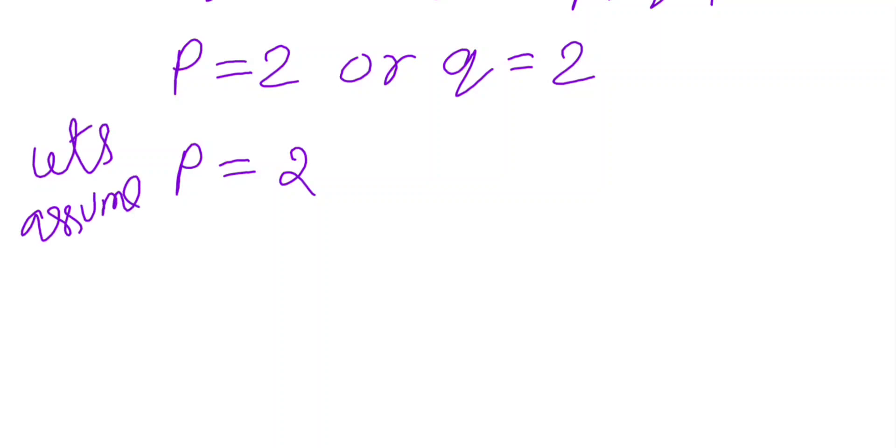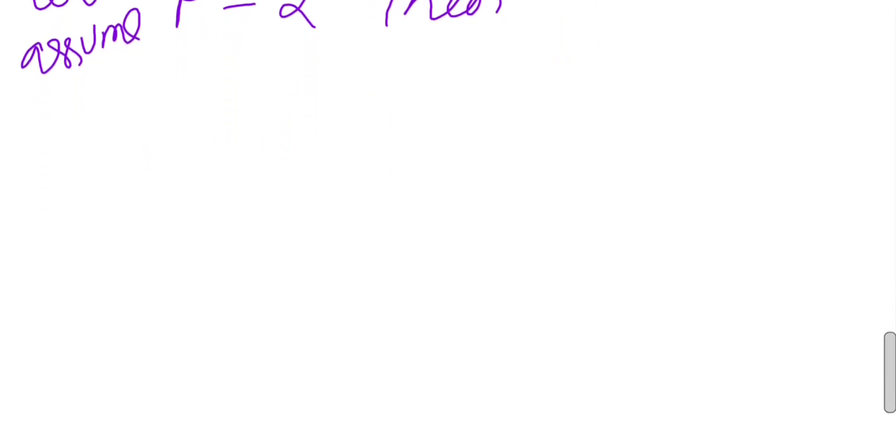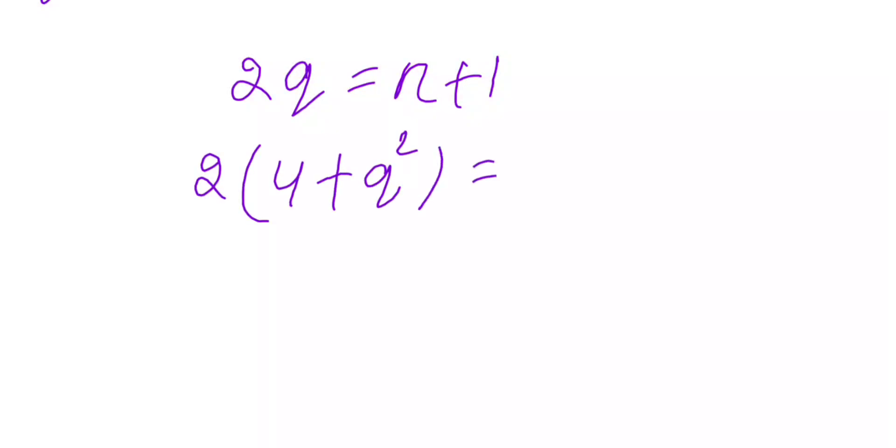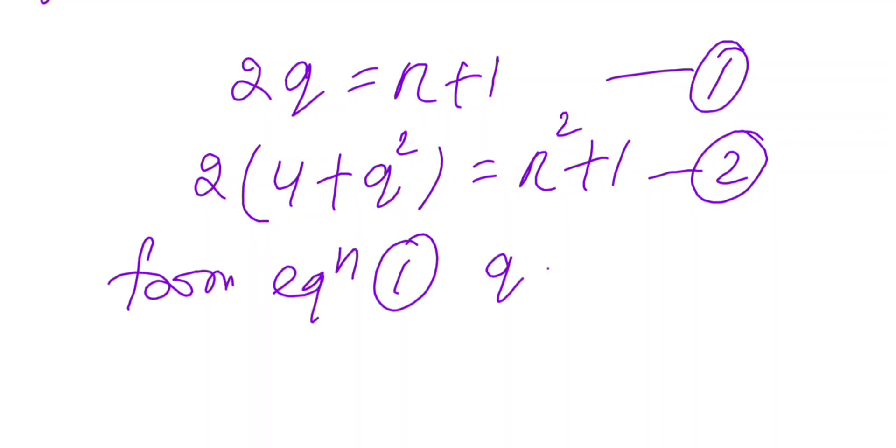Let's assume p equals 2. Then our equation becomes 2q equals r plus 1, and q squared equals r squared plus 1. Say equation 1 and equation 2. From equation 1, we get that q equals r plus 1 over 2.